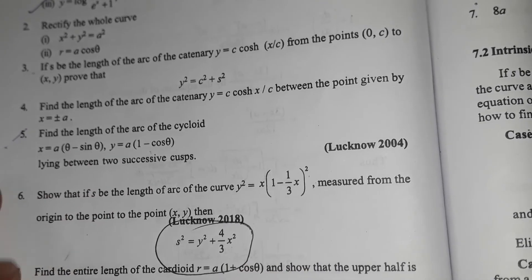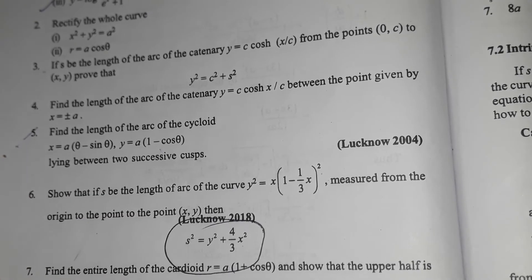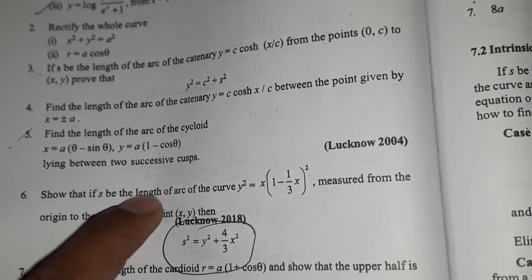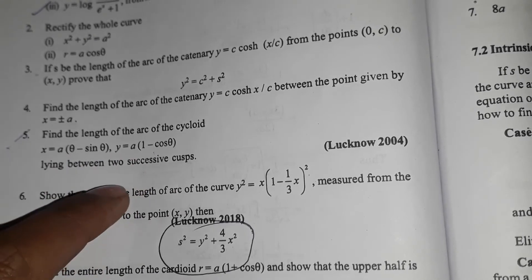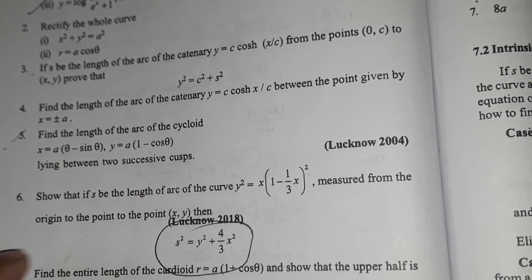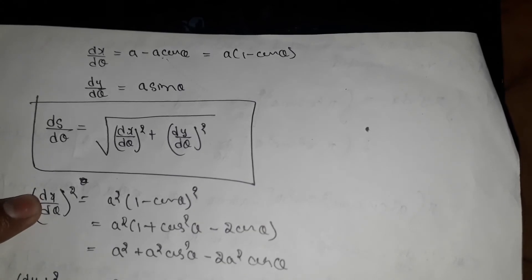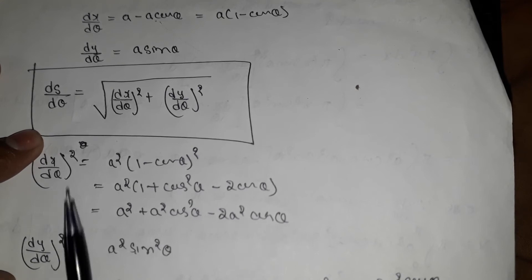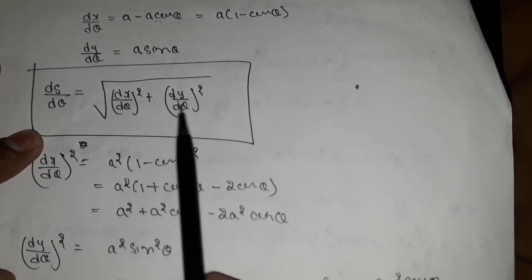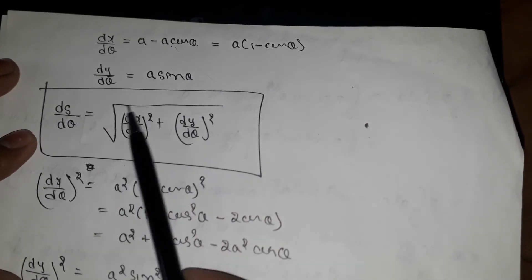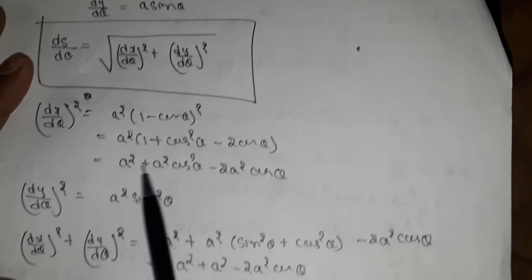For parametric equations, we have two functions x, y in terms of theta. We differentiate with respect to theta. The arc length formula for parametric form is ds by d theta equals the square root of (dx by d theta) squared plus (dy by d theta) squared. We apply this formula, using dx by d theta from x equals a(theta minus sin theta) and dy by d theta from y equals a(1 minus cos theta), then simplify.